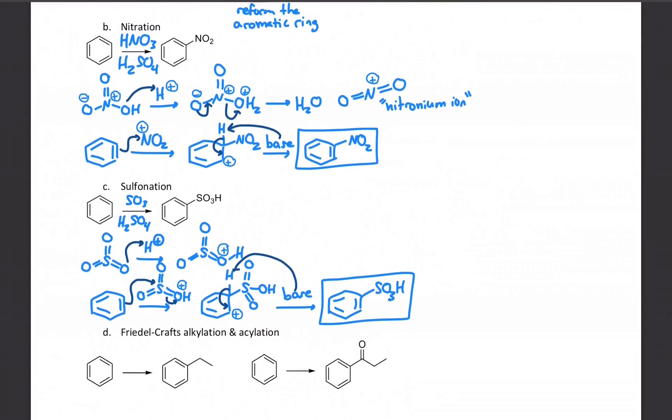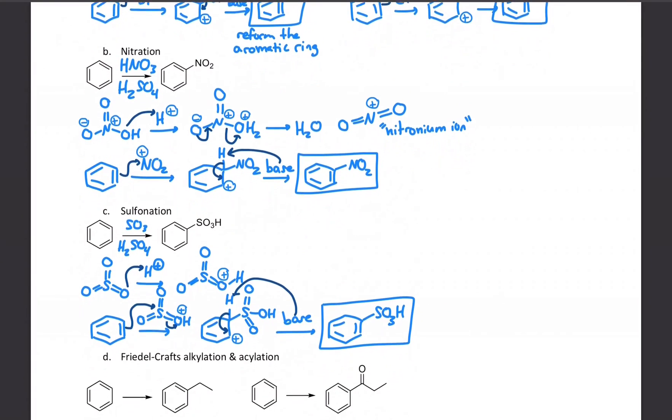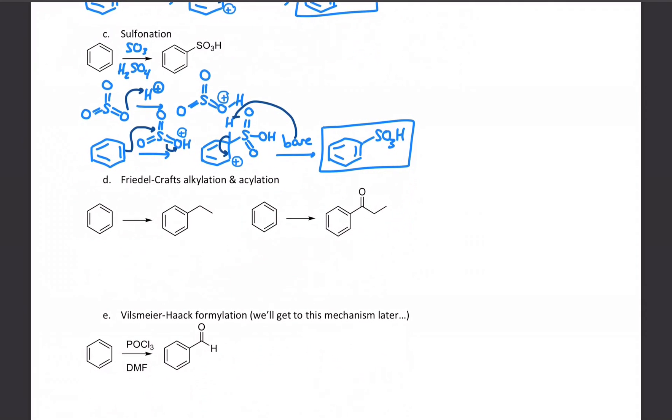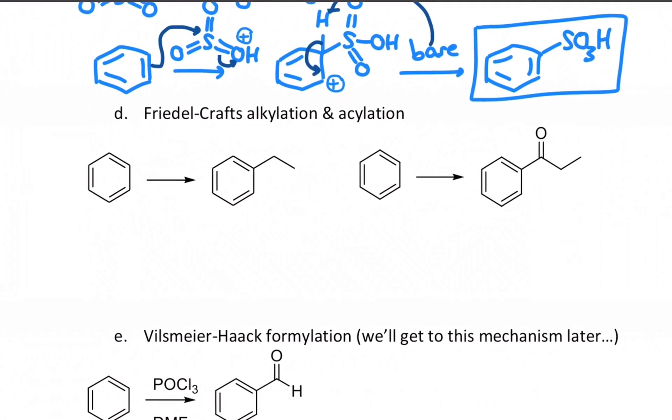So those are all quite electron withdrawing. We've got a halogen, a nitro, and a sulfonyl. They're useful for changing the electronics of the ring. But if we want to homologate this ring and make it bigger, we need to add carbon groups. And that's how we're going to wrap up today. So how do we add carbon groups to this ring?